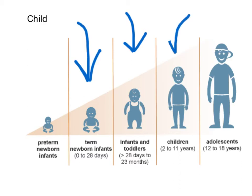Childhood is then the period between 2 and 11 years old, or until the onset of puberty. Puberty then indicates the beginning of adolescence, which usually occurs until 18 years old.